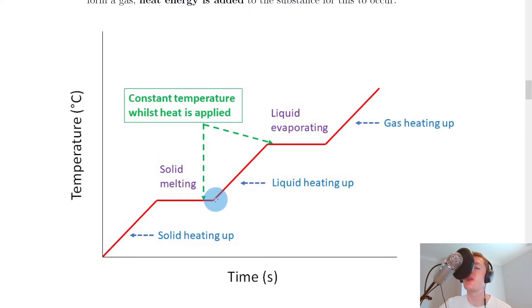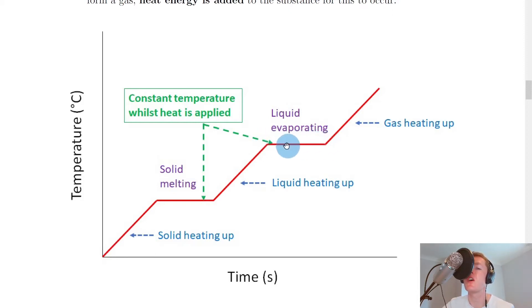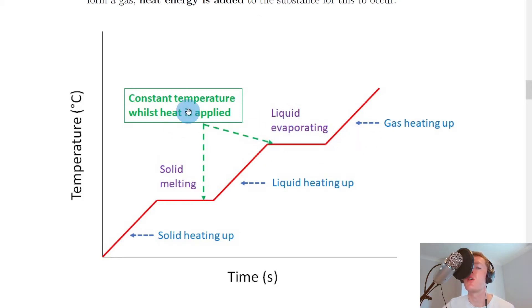If we continue to apply heat to the liquid, the liquid will heat up and its temperature will increase over time until it reaches its boiling point. At this point, as we continue to apply heat, the liquid evaporates into a gas, and it takes this length of time until all of the liquid has been evaporated into a gas. Notice how we've got another horizontal line on the graph, which represents another point of constant temperature. So for the two changes of state — from solid into liquid and liquid into gas — we have a constant straight line on our graph.